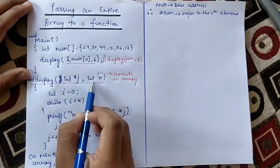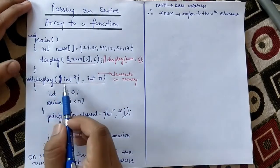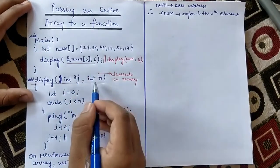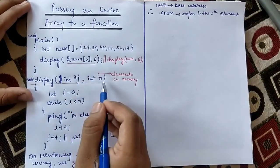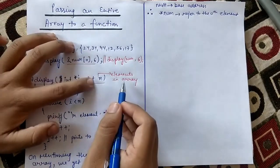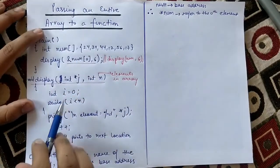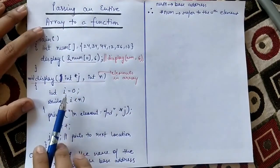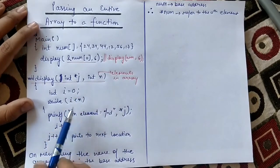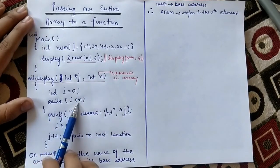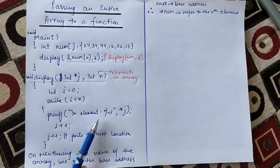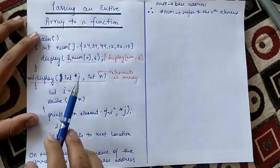We have to give the length of the array as well. In the display function we are taking a pointer `int *j` and a variable `int n` which will store the number of elements in the array — that is 6. So we are running a loop from 0 to n, which is length 6, so it will run 6 times. While i is less than n, we are simply printing the element value: `*j`.